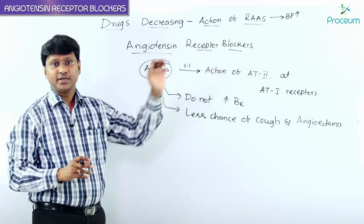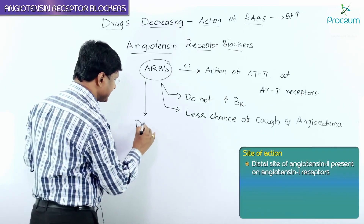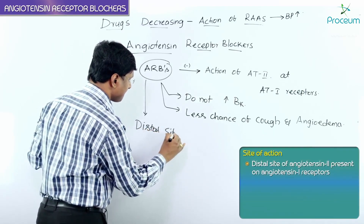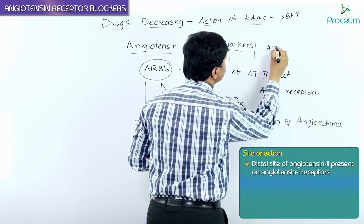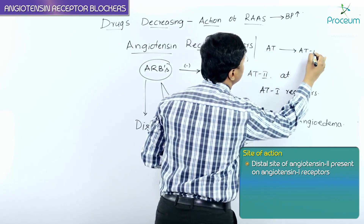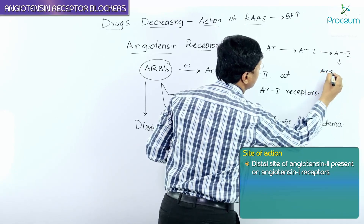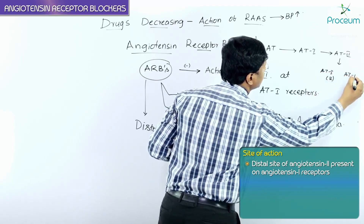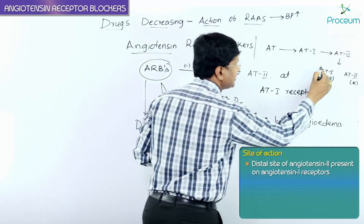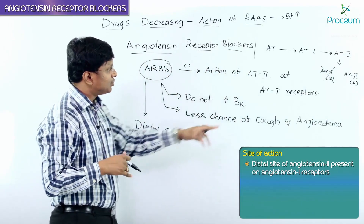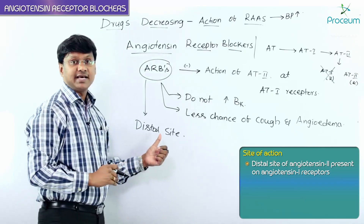Looking at the entire RAS pathway, ARBs are acting at a distal site. Angiotensin is converted to Angiotensin 1, then to Angiotensin 2, which acts on Angiotensin 1 receptors and Angiotensin 2 receptors. ARBs act at this point — they act on the Angiotensin 2 receptor site, specifically blocking action at the Angiotensin 1 receptors.